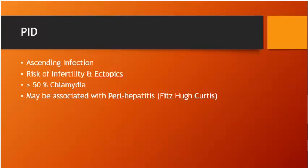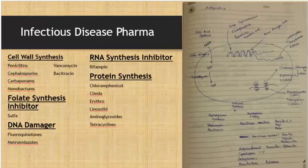Pelvic inflammatory disease is an ascending infection with a risk of infertility (about 12% incidence of infertility or ectopic pregnancy). More than 50% of PID cases are due to Chlamydia. Neisseria (with >50% females asymptomatic) also goes with chlamydia here. PID may be associated with perihepatitis — Fitz-Hugh-Curtis syndrome.